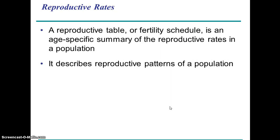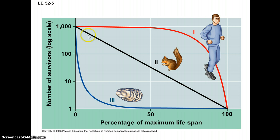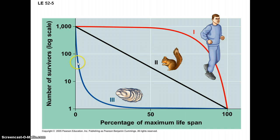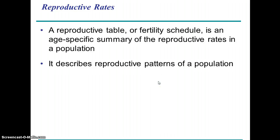Life history patterns connect to survivorship curves. Individuals with a type 1 survivorship curve have high survivorship early on, in part because there is significant parental care; they tend to have fewer young. Species with a type 3 survivorship curve tend to have lots of offspring with little or no parental care. There's lots of mortality among the young, but they make up for it by having so many offspring — that's a general trend in these types of species.